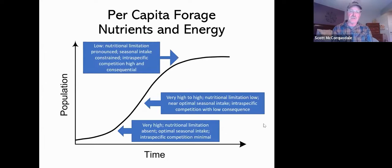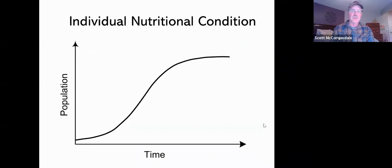When you get up to here, things have changed a lot. The per capita forage nutrients and energy is low, there's a strong nutritional limitation occurring, seasonal intake can be dramatically constrained, and this individual-to-individual competition within the population can be really high and of consequence. There are distinct winners and losers in this game.